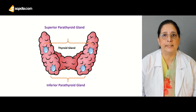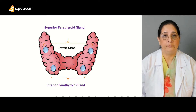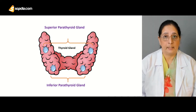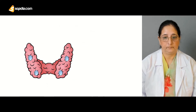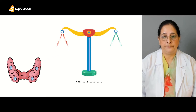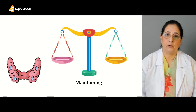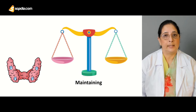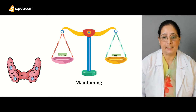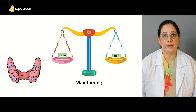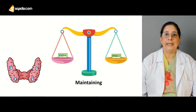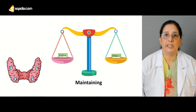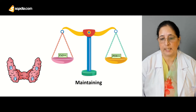The parathyroid glands are very small — about the size of a rice grain — but very important. They produce parathyroid hormone, whose function is maintaining the balance between calcium ions and phosphate ions in the body.